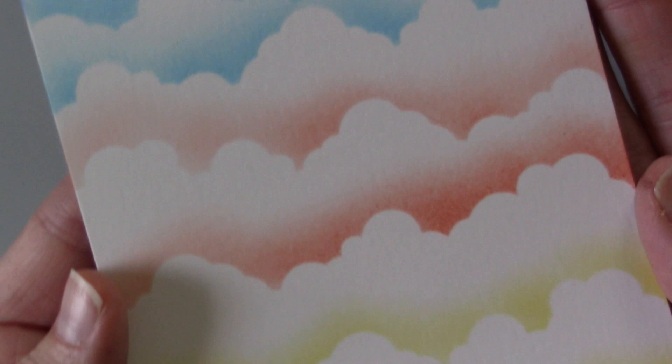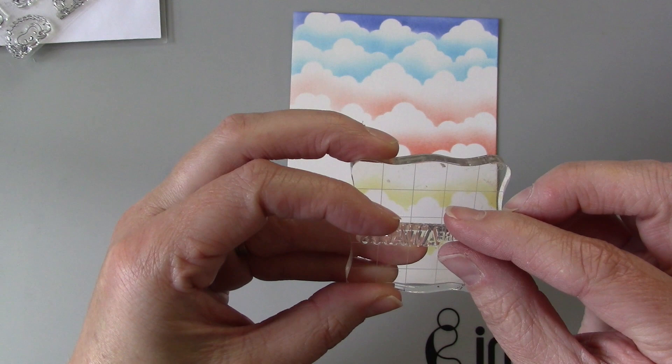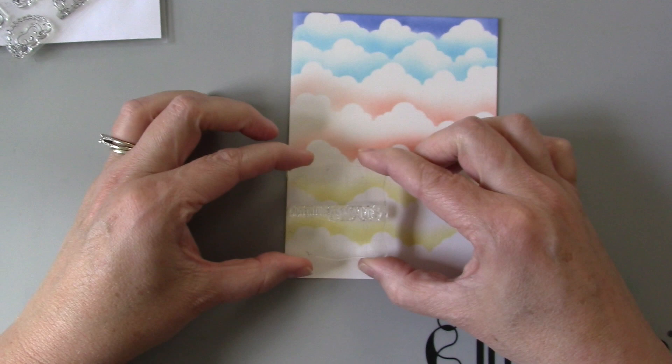So now I am going to add a sentiment to the card and I'm going to use the same inks that I used to make the background and in this case I'm going to be using the Danube blue memento ink and I'm just putting the stamp on an acrylic stamping block and finding a position that will look great with my card.